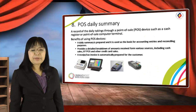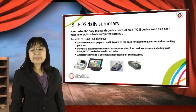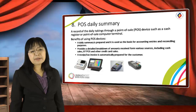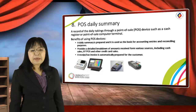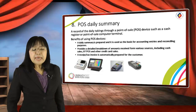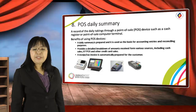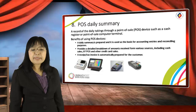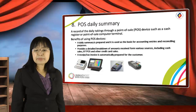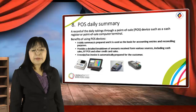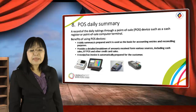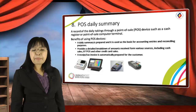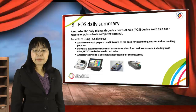Point of Sales Daily Summary. A point of sales daily summary is a record of the daily takings through a point-of-sales (POS) device, such as a cash register or point-of-sales computer terminal. A daily summary is prepared and used as a basis for accounting entries and reconciling purposes. It provides a detailed breakdown of amounts received from various sources, including cash sales, electronic fund transfer at point-of-sale, and other credit card sales. A receipt tax invoice is automatically prepared for the customer through the computer terminal.